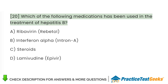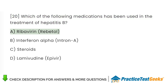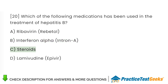Which of the following medications has been used in the treatment of hepatitis B? A. Ribavirin, Rebetol. B. Interferon-alpha, Intron A. C. Steroids. D. Lamivudine, Epivir.